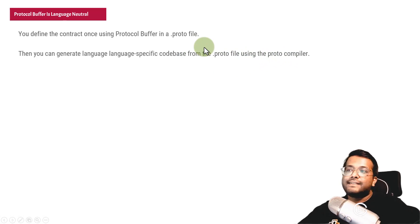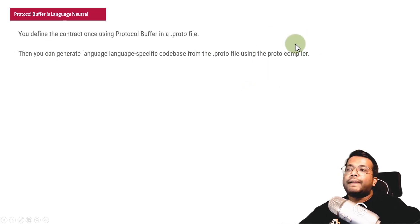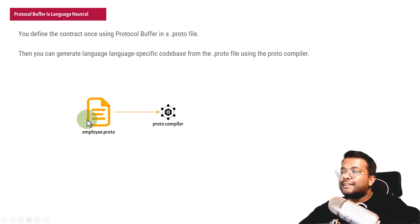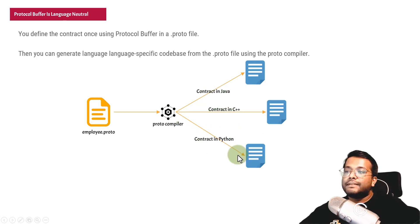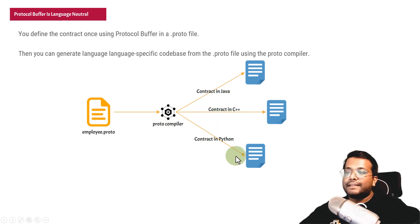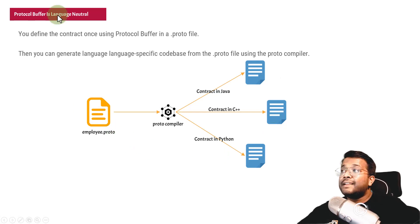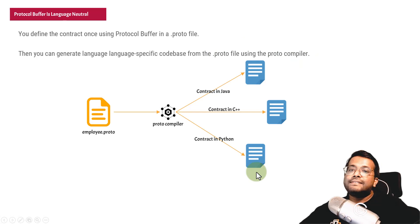Once you define the contract, that's it — you are done. For any language, be it Node.js, Python, Java, Golang, anything, you just need a proto compiler for that language. Using the proto compiler, you can generate classes for your different languages. Let's say there's an employee.proto and there's a proto compiler — also provided by Google itself. You can use it to generate different files: a contract in Java, a contract in C++, a contract in Python. So using one employee.proto file with the proto compiler, you can generate stubs for different languages and use them easily.